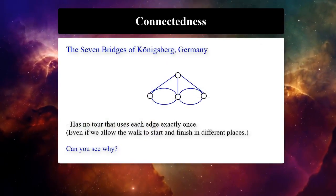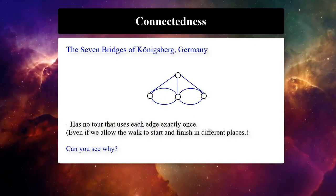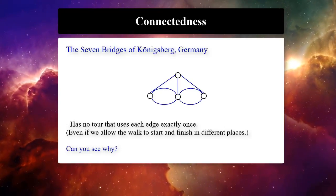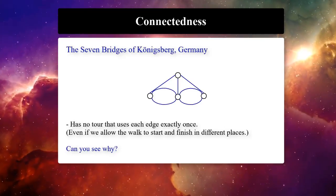Euler argued that no such path exists. His proof involved only references to the physical arrangement of the bridges, but essentially he proved the first theorem in graph theory.